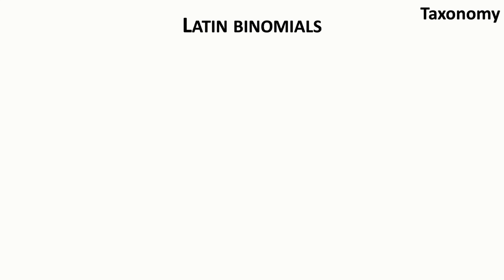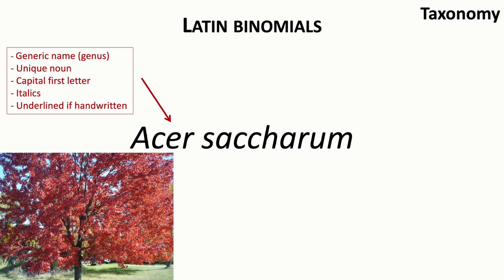Let's start off by looking at plant taxonomy, or the system of naming plants. All plants have a unique Latin binomial written according to a particular convention. For example, Acer saccharum is the Latin binomial for sugar maple. Acer is the generic name, or genus — it is a unique noun, in this case the genus of all maples. The convention is to write the genus with a capital first letter and in italics, or underlined if handwritten.